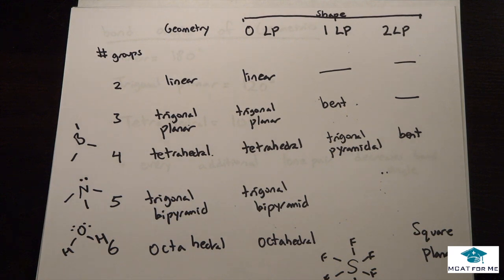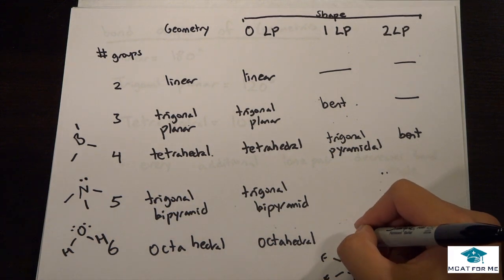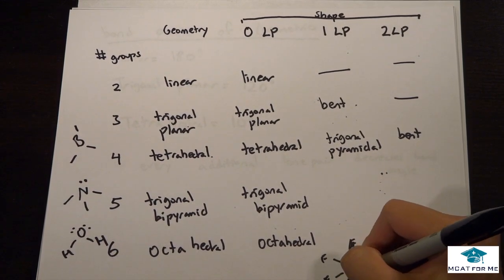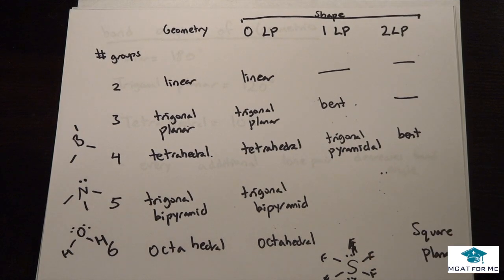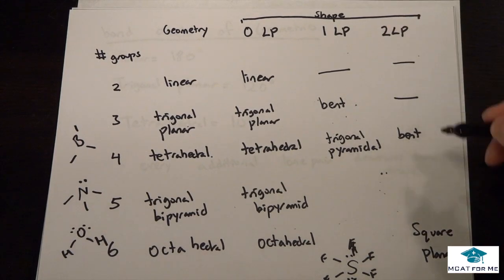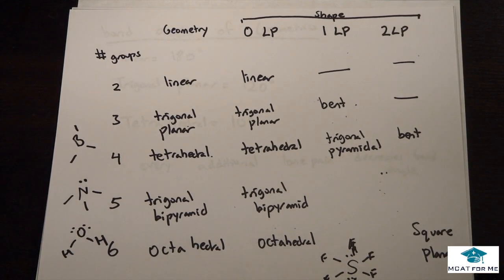Now what happens, what would its shape be? Well, it would also be octahedral, okay? But now what if these were gone and now these became lone pairs? So it now has four groups and two lone pairs. Well, just look at our table. Two lone pairs - square planar. That's all you need to know. Very simple.